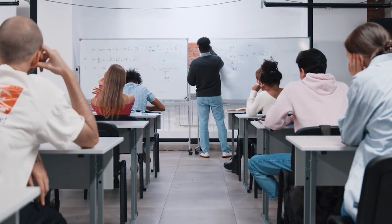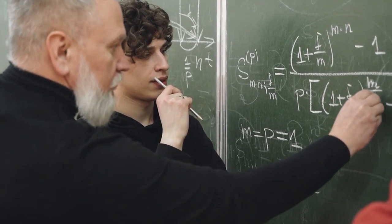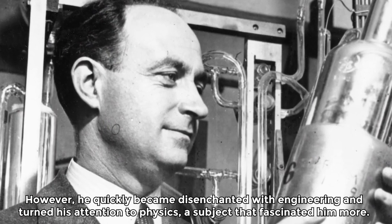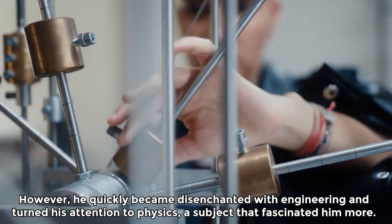In 1918, at the age of 17, Fermi entered the University of Pisa to study engineering. However, he quickly became disenchanted with engineering and turned his attention to physics, a subject that fascinated him more.